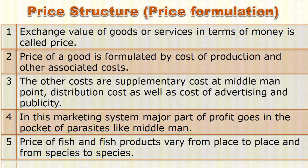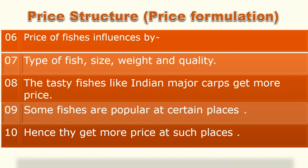Price of fish and fish products vary from place to place and from species to species. Price of fish is influenced by type of fish, size, weight, and quality. If the quality is good, then the price is high. If the length of fish is long, the price is also high. Place and determination of cost of fish are also important factors.